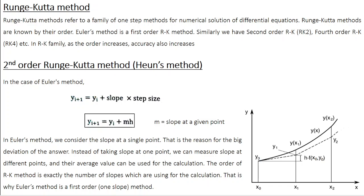In Euler's method you consider slope at a single point, hence it is a first-order Runge-Kutta method. In RK2 you consider slopes at two points, and in RK4 you consider slopes at four points. The more slopes you calculate, the better your result will be.